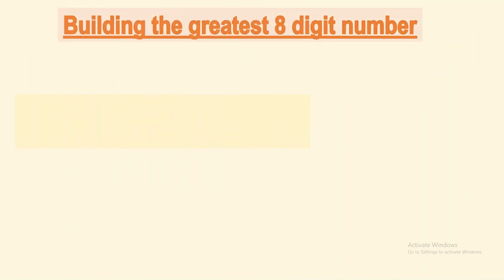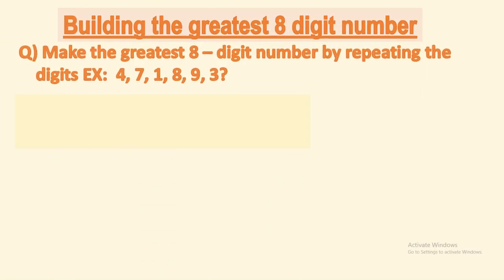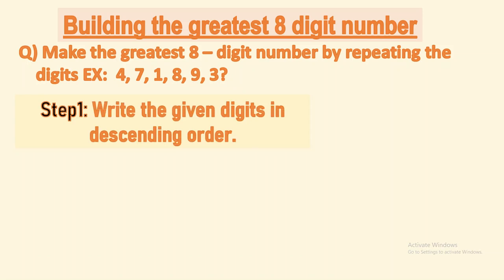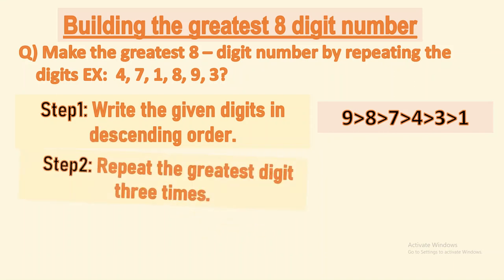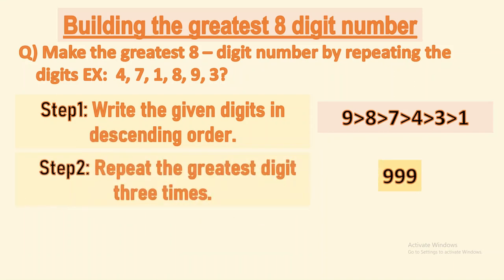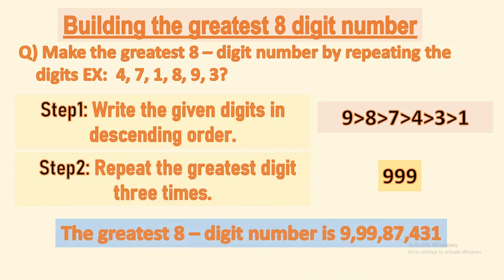Now let's go for the next concept: building the greatest eight digit number. We are given only six digits and need to make an eight digit number, so we need to repeat a digit. To make the greatest number, repeat the greatest digit. Step one: write the digits in descending order — 9, 8, 7, 4, 3, 1. Then repeat 9, the greatest digit. The greatest eight digit number is 9 crore 99 lakh 87,430.